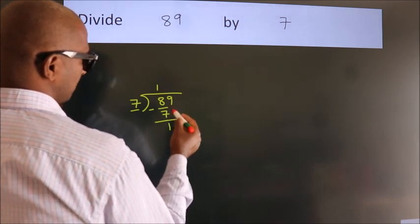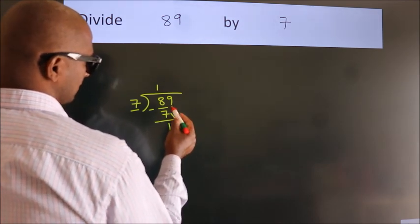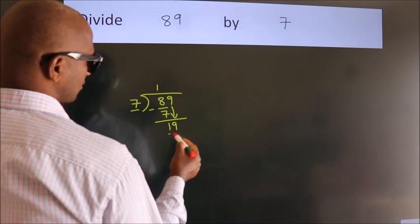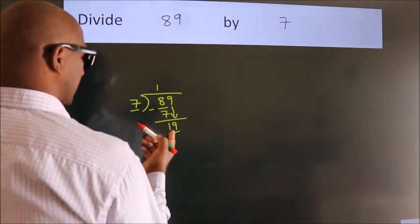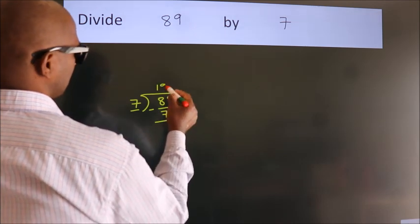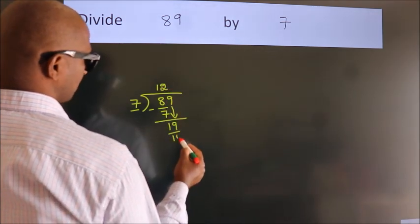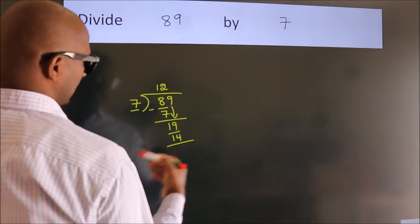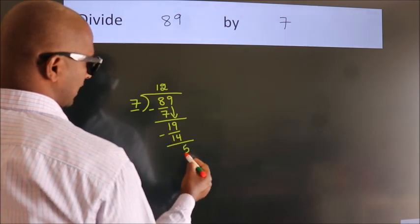After this, bring down the beside number. So 9 down, so 19. A number close to 19 in 7 table is 7, 2s, 14. Now, we subtract. We get 5.